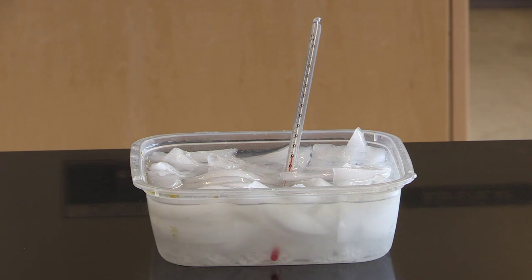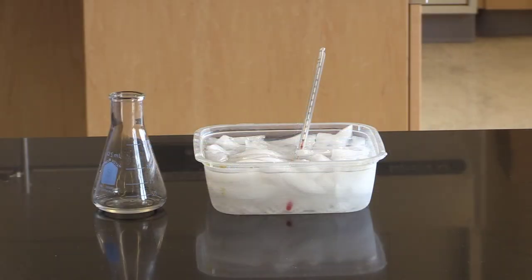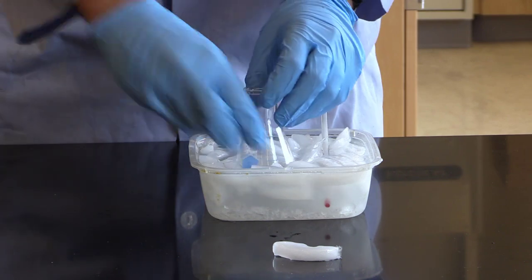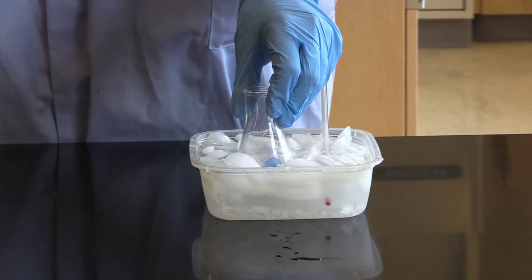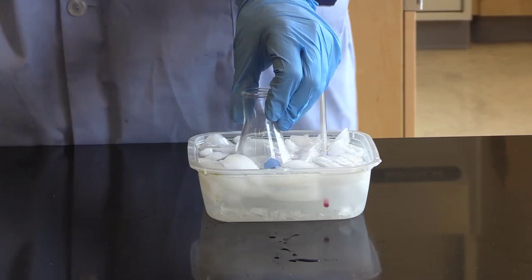By having a rock salt ice bath, this will ensure that the aspirin crashes out of the solution. Our flask has now reached room temperature, so we can put it into the rock salt ice bath. We're going to let it sit for 15 minutes. During those 15 minutes, we should start to see the aspirin crystals form.